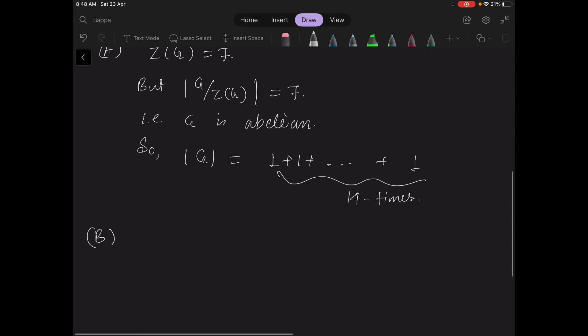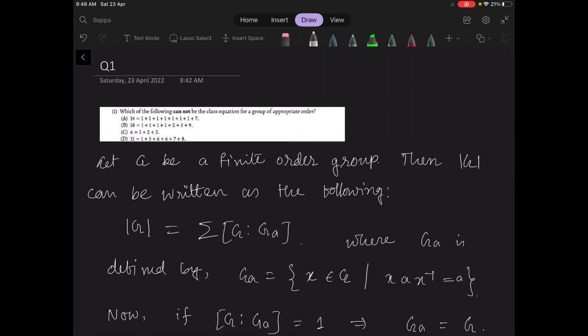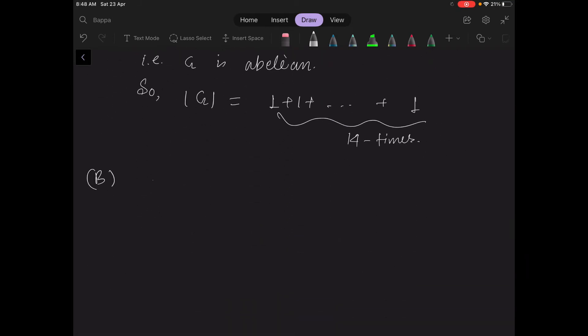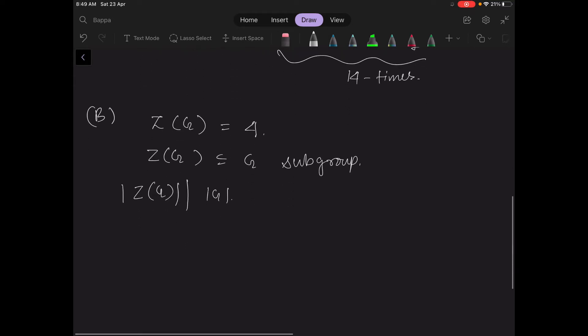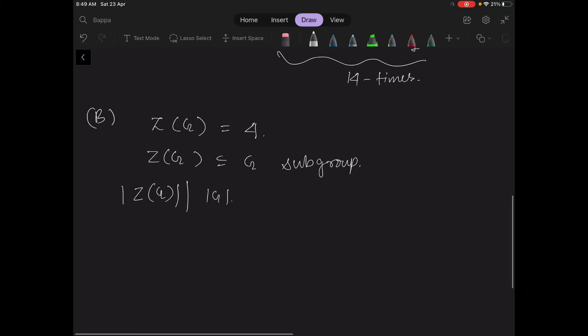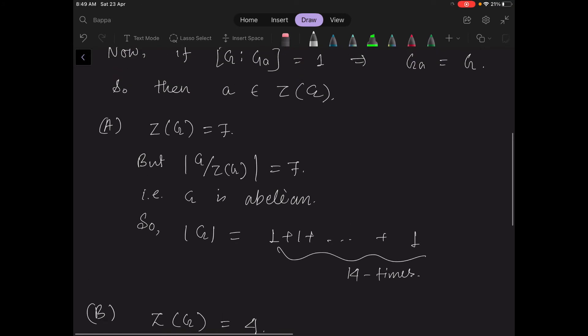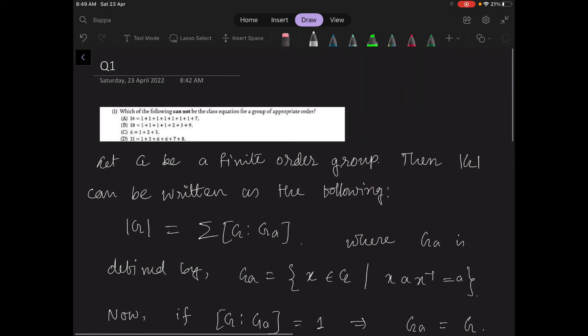Now option B, which says 18 equal to 1 plus 1 plus 1 plus 2 plus 3 plus 9. Then let us look at the number of elements in Z(G). |Z(G)| is equal to 4. But Z(G) is a subgroup of G, so by Lagrange's theorem, order of Z(G) must divide order of G, but this is not the case here. So the first two options say that they are not the class equation of a group.